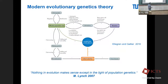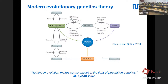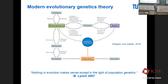I go back to this graph I talked about already on Monday. I like this sentence from Michael Lynch: there is the famous saying that nothing in biology makes sense except in the light of evolution, and Michael Lynch said nothing in evolution makes sense except in the light of population genetics. What we just have to hope is that population genetics makes sense — because otherwise we have a problem. That's what I try to convince you of — that some things make sense sometimes.